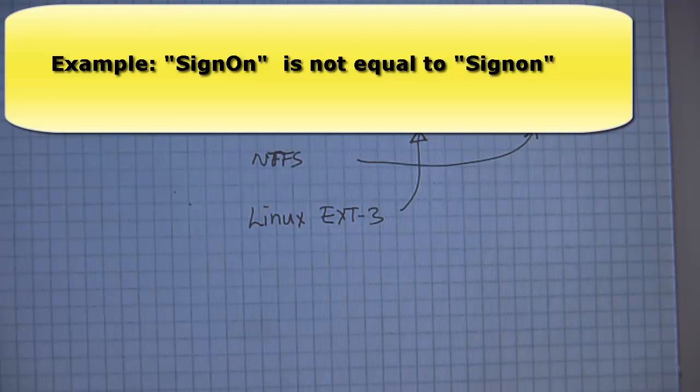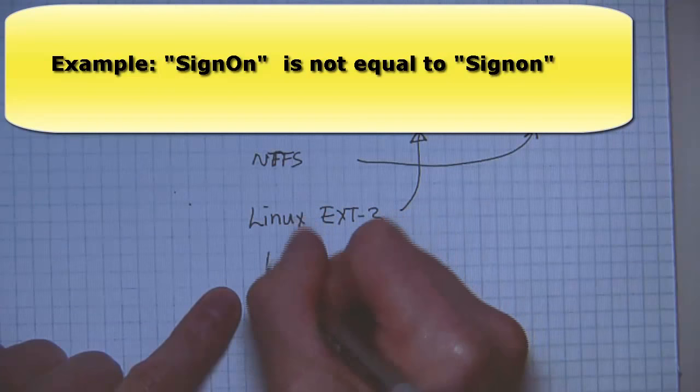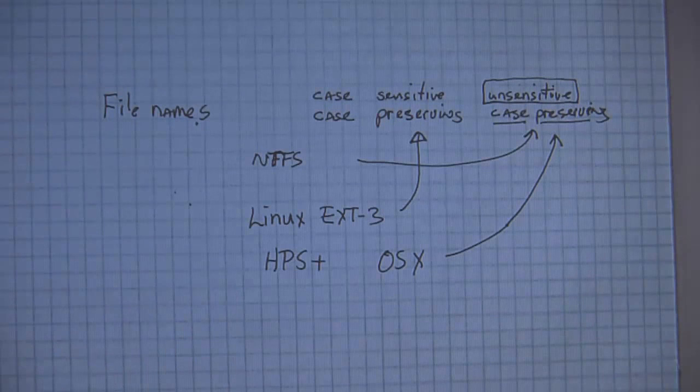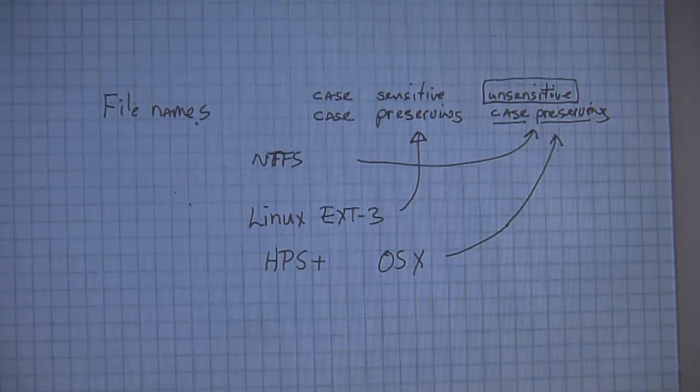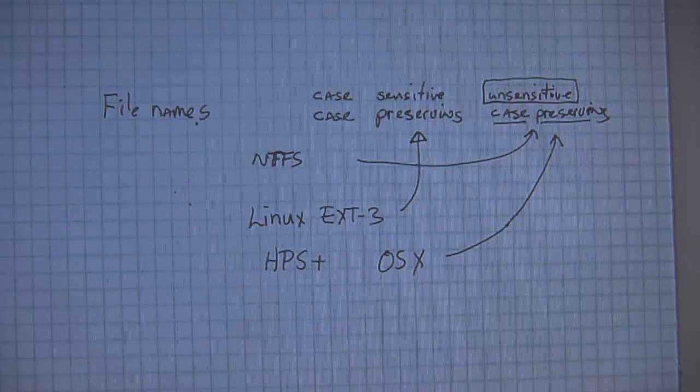Now, the HFS plus, which is used by the Mac OS X, that is like Windows. It is case insensitive, case preserving. So when you go to the Mac operating system, you're fine. It acts just like Windows. But if you go to Linux, it is absolutely so irritating, because you're so not used to being case sensitive. Everything is case sensitive in Linux.